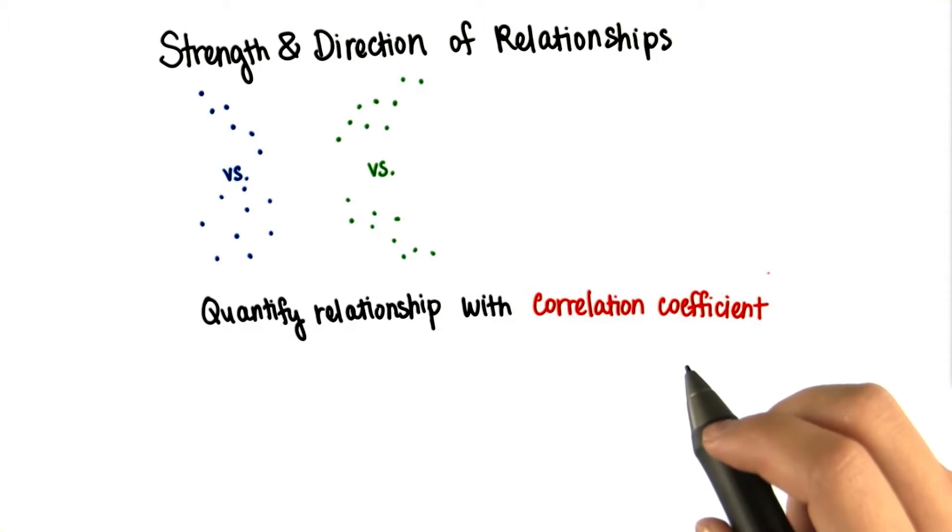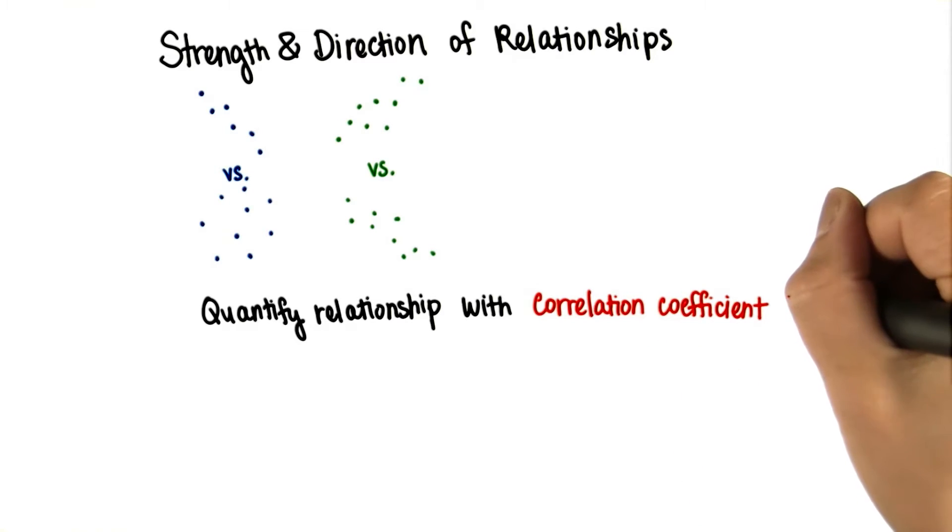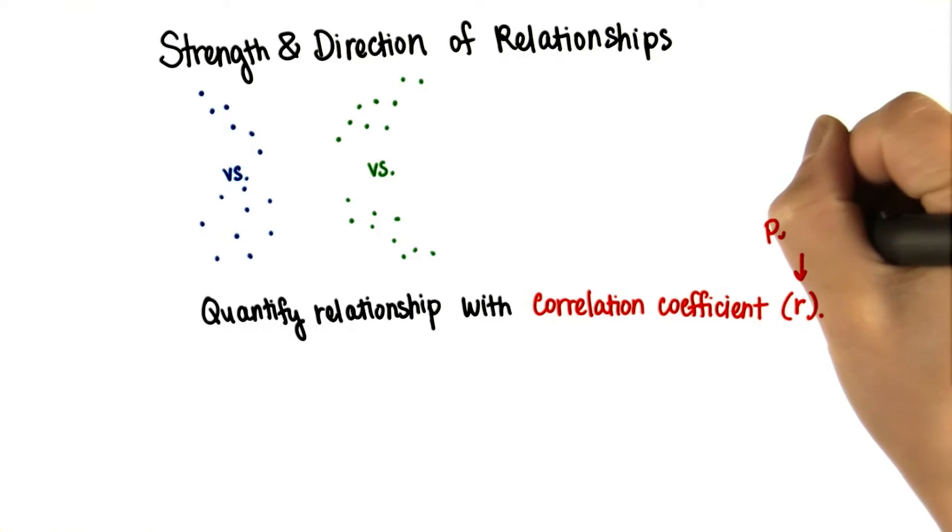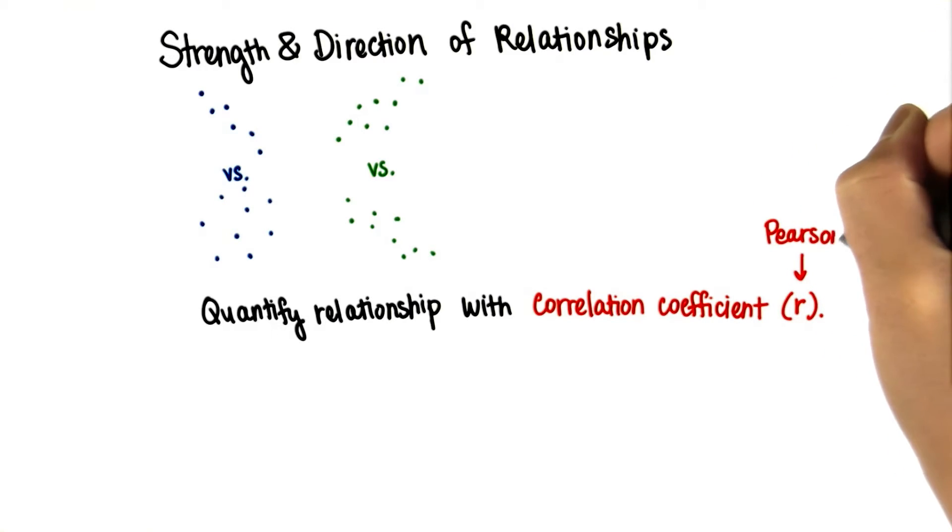The number that quantifies the relationship is called the correlation coefficient, denoted by r. You've seen r before when we did t-tests. This is also known as Pearson's r, named after a statistician as usual.